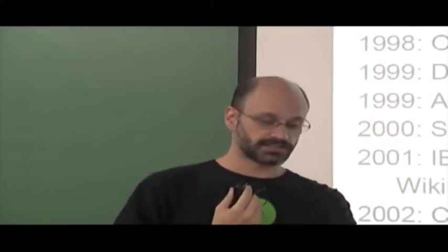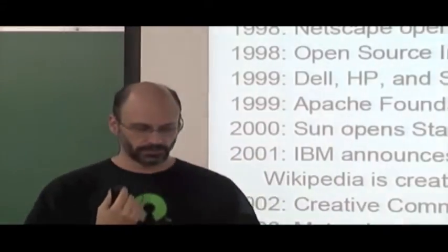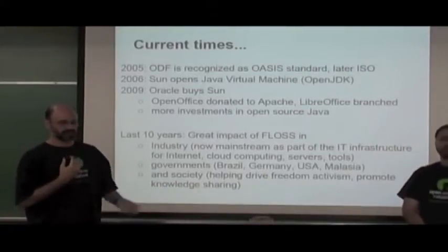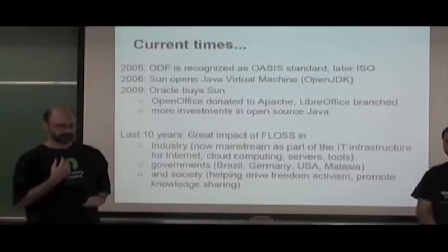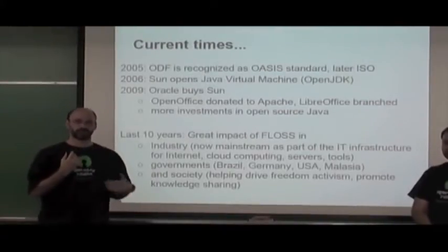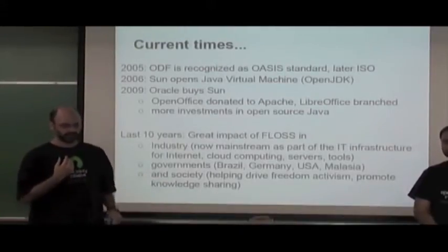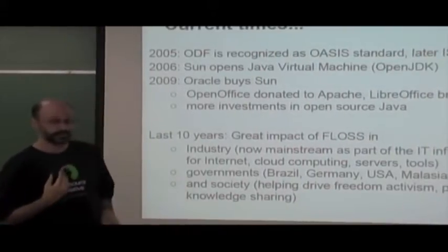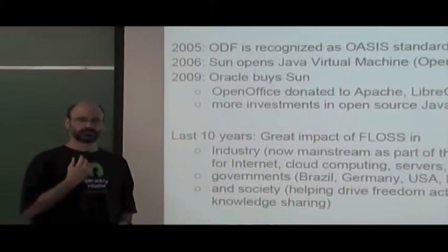In 1999, the Apache Foundation was formed. Sun then opened StarOffice, creating the OpenOffice suite. IBM announced an investment of $1 billion in the Linux operating system, the same year Wikipedia was created. More recently, ODF became both an OASIS and ISO standard, Sun opened the Java virtual machine as OpenJDK, Oracle bought Sun, OpenOffice was donated to Apache, and a LibreOffice branch was created.